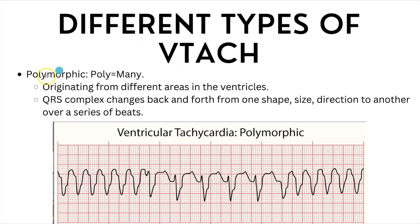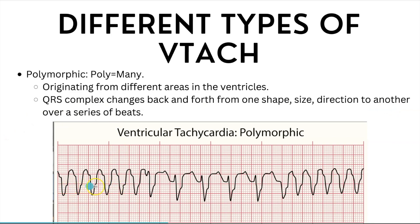There's also polymorphic ventricular tachycardia — poly means many. Instead of one troublemaker, there are several areas in the heart firing, each competing to take control. The QRS complex changes back and forth from one shape, size, and direction to another over a series of beats. You can see the beats firing from one area, then they start to look different, then return to the other ectopic foci.